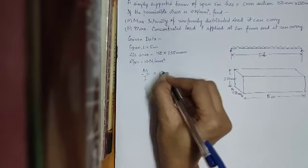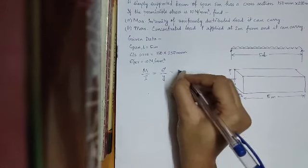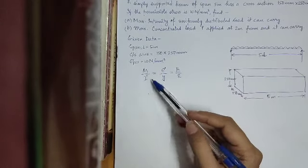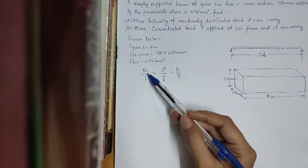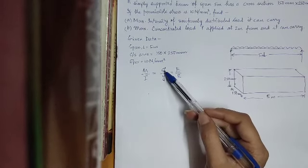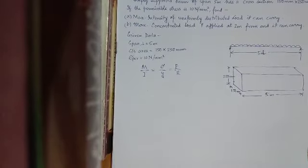Now as we have discussed in the previous classes, the equation of bending moment is: M by I is equal to sigma by Y is equal to E by R. We are more or less familiar with these terms. M is for bending moment, I is meant for moment of inertia, sigma is the bending stress that the beam is experiencing.